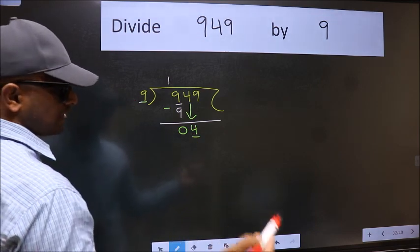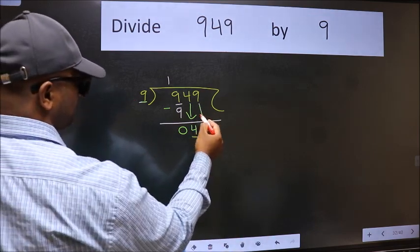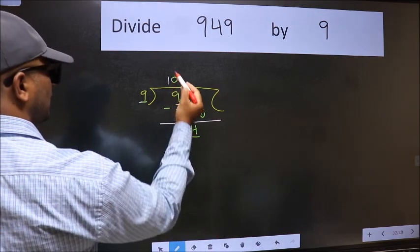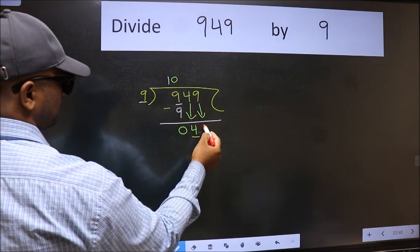So we should bring down the second number. And the rule to bring down second number is we should put 0 here. Then only we can bring this number down.